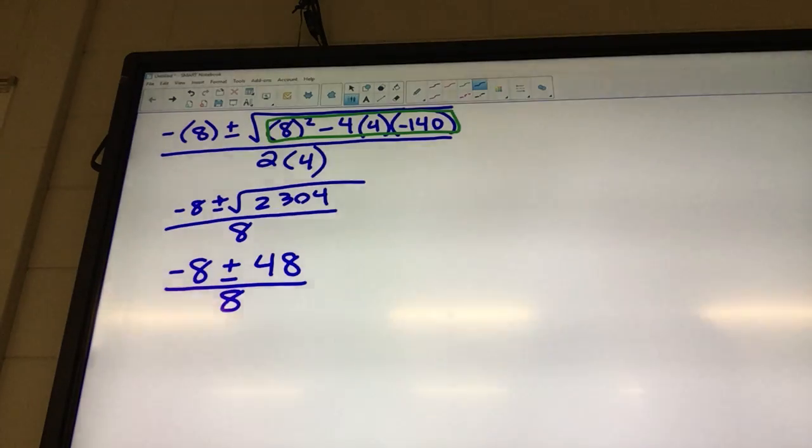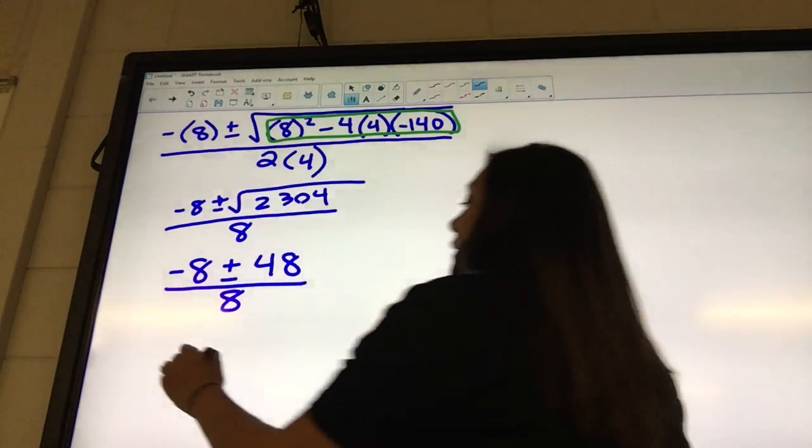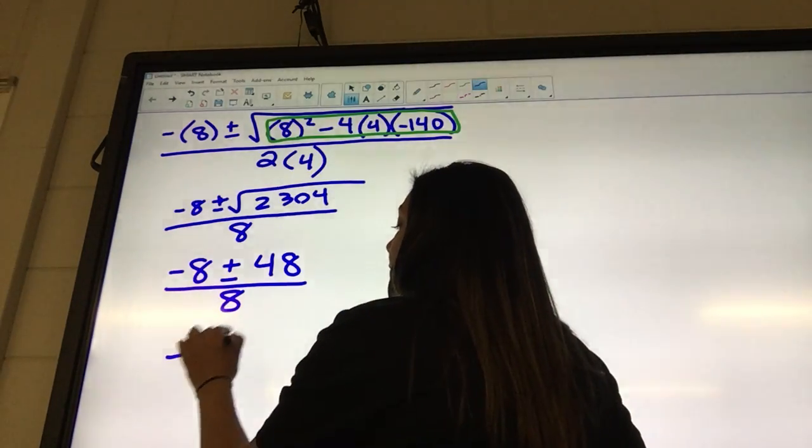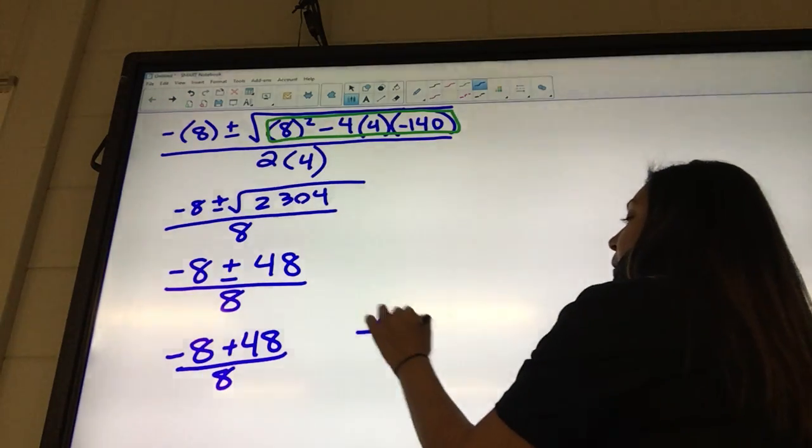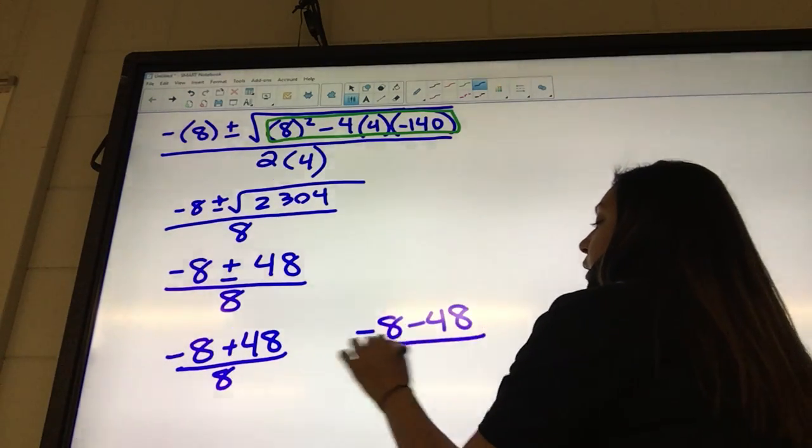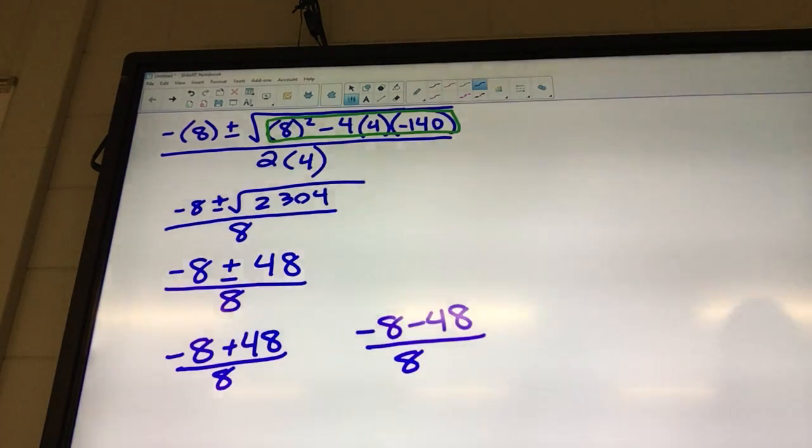Now what do we do? Negative 8 plus 48 over 8, negative 8 minus. Yeah, so we write it twice, one with a plus, one with a minus. So I got negative 8 plus 48 over 8 and negative 8 minus 48 over 8.